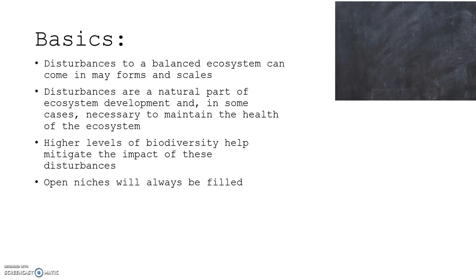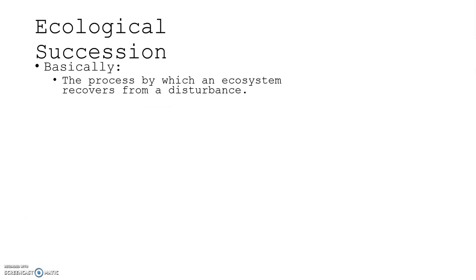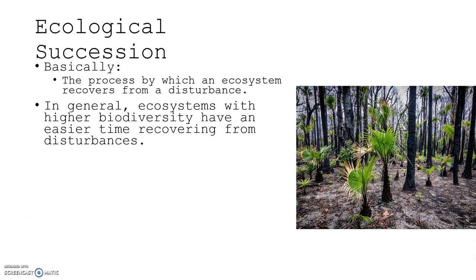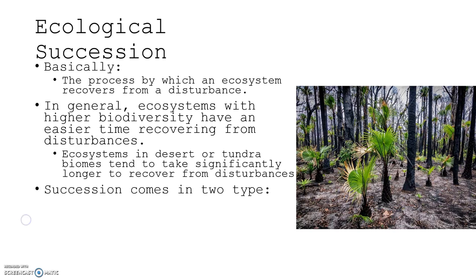Open niches will always be filled. Ecological succession is the process by which an ecosystem recovers from a disturbance. In general, ecosystems with higher biodiversity have an easier time recovering. Ecosystems in the desert or tundra biomes tend to take significantly longer to recover from these disturbances.